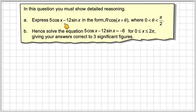Express 5 cos x minus 12 sin x in the form R cos(x plus theta) where theta is between 0 and pi by 2. Then hence solve the equation 5 cos x minus 12 sin x equals minus 6 for x between 0 and 2 pi. Give your answers to three significant figures.